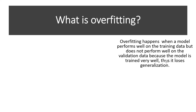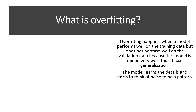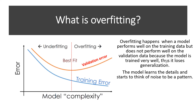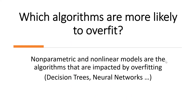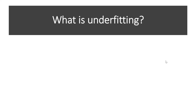So what is overfitting? Overfitting happens when a model performs well on the training data but does not perform well on the validation data, because the model is trained too well and thus loses generalization. The model learns the details and starts to treat noise as pattern. As we said, we have a high error in the validation set and a smaller error in the training set. When we have overfitting, we have low bias and high variance. The algorithms more likely to overfit are non-parametric and non-linear models, such as decision trees and neural networks.